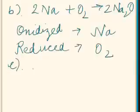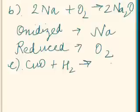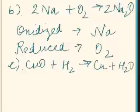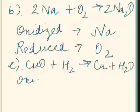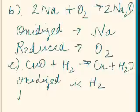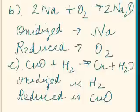The substance which is getting reduced is obviously oxygen. Our third chemical reaction: copper oxide is reacting with hydrogen, producing copper and water. In this reaction, the substance getting oxidized is hydrogen, as hydrogen is converted into H₂O, that is water. The substance getting reduced is copper oxide, which reduces into copper.